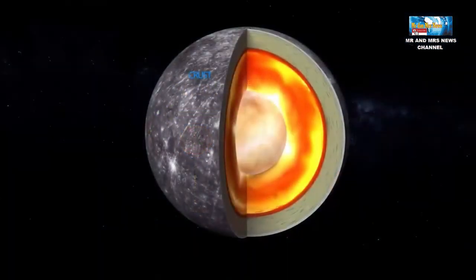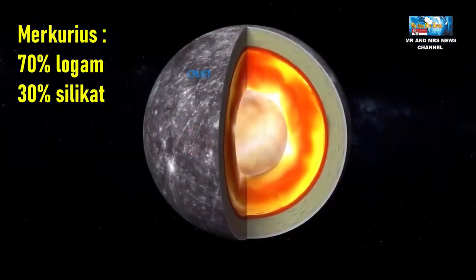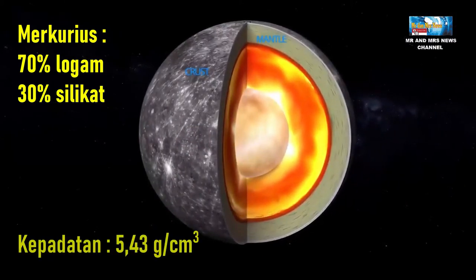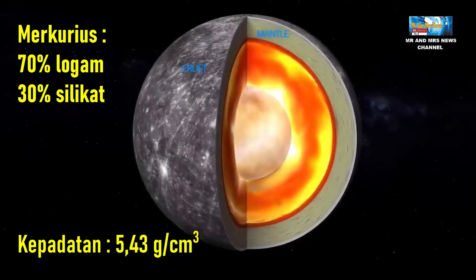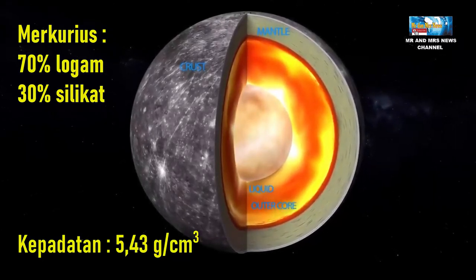Merkurius terdiri dari 70% logam dan 30% silikat serta mempunyai kepadatan sebesar 5,43 gram per cm3, hanya sedikit di bawah kepadatan Bumi.